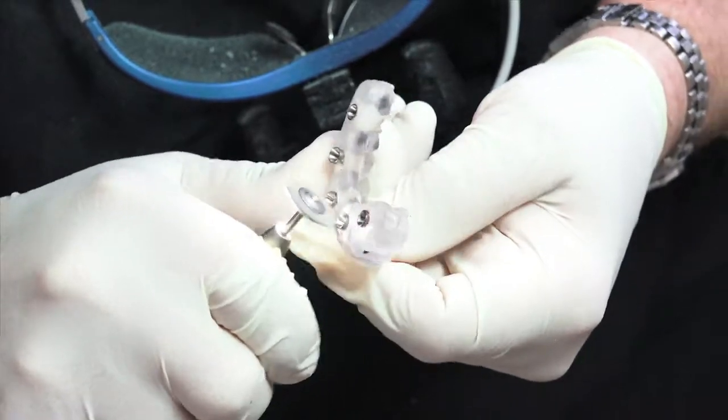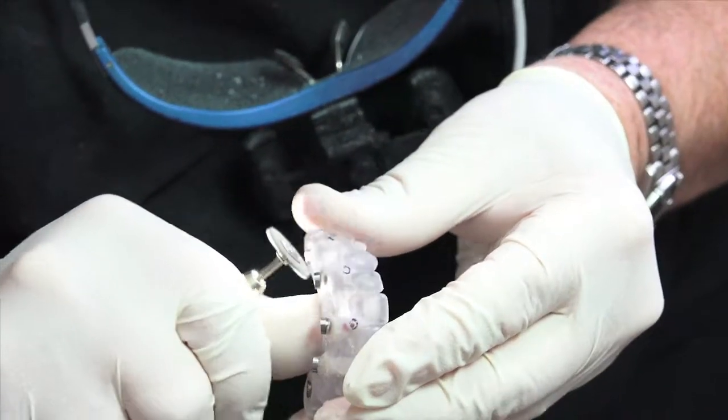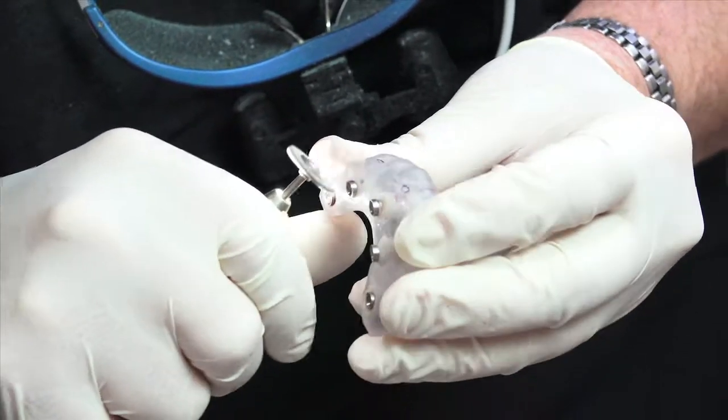The clear duplicate bridge along with the small fixation screws and the multi-unit analogs are typically sent to the restorative clinician for the first restorative appointment for the final prosthesis.